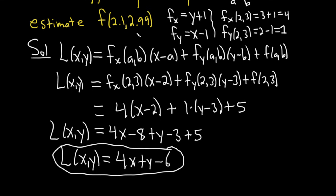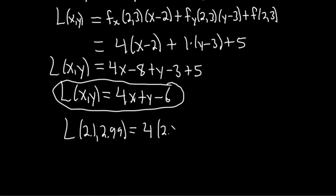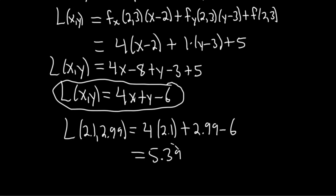Now let's use it to estimate. We're going to plug in 2.1 and 2.99 into this. L of (2.1, 2.99) is going to be 4 times 2.1 plus 2.99 minus 6. Let me grab my calculator just to be sure. 4 times 2.1 plus 2.99 minus 6 gives us 5.39. So 5.39 should be the approximation.